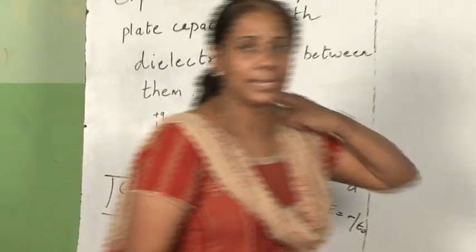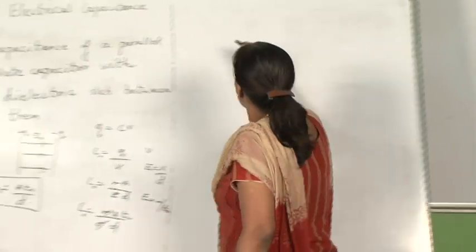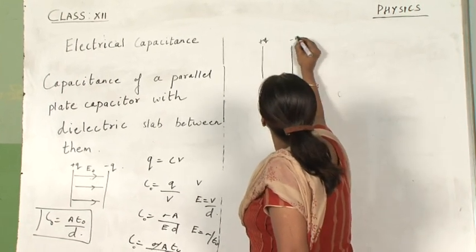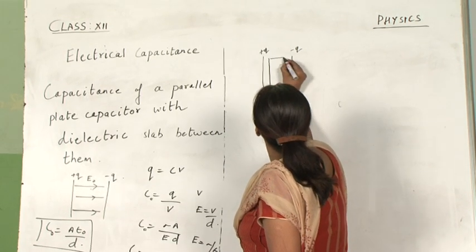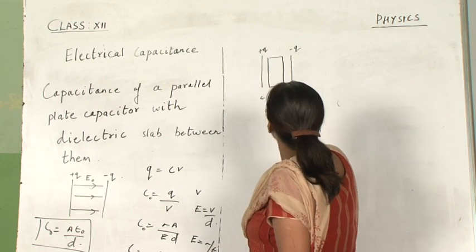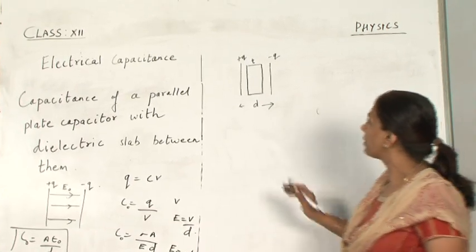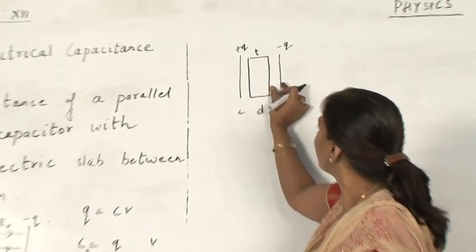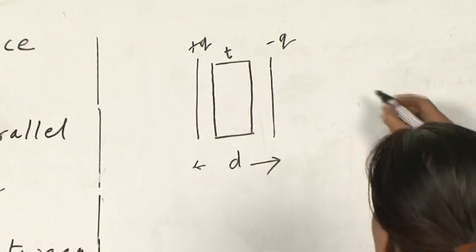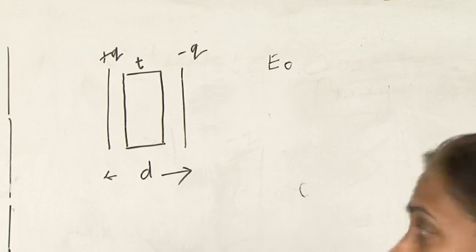Now let us see what happens when a dielectric substance or dielectric slab is introduced in between the plates. Suppose the distance between the two plates is D and the thickness of the dielectric slab is T. In the region of D minus T, the electric field will be E naught, whereas inside the dielectric, the electric field will get reduced.